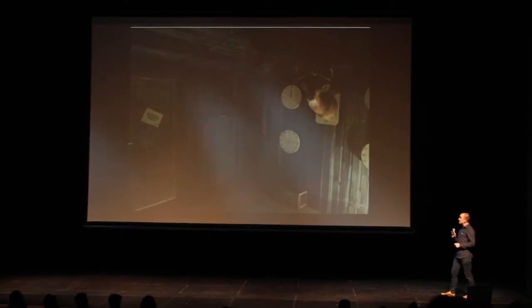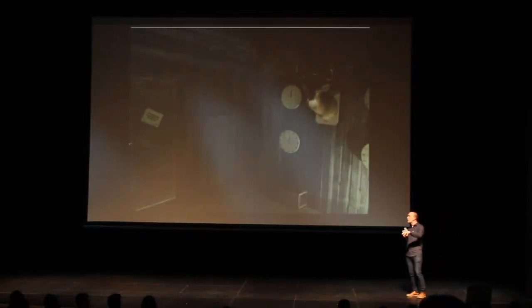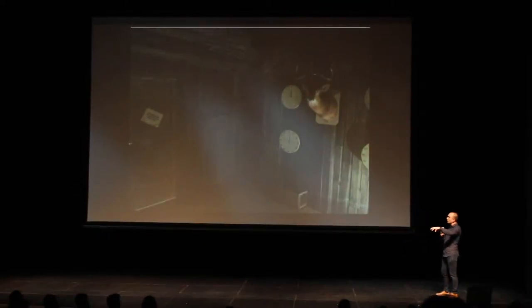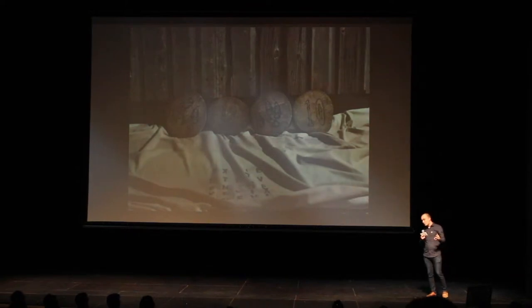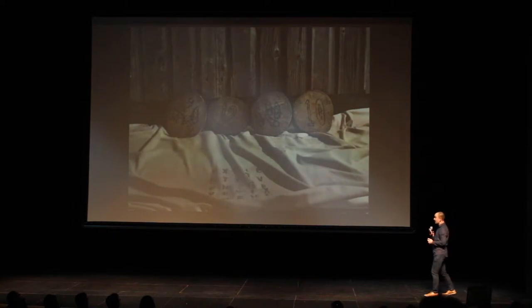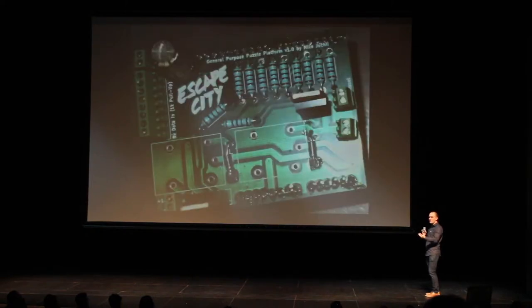Then we actually start creating the puzzles, and the thing about creating puzzles is that they need to live inside the magic circle. If we're creating a cabin as our theme, maybe it's a domino puzzle on the table. We also take puzzles and fit them into the theme — for example, a simple algebra puzzle like two apples plus one orange equals twelve. We just changed the fruit to animals, put it on wood rounds, and now it lives in the escape room.